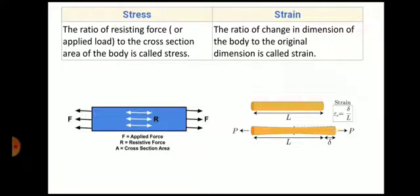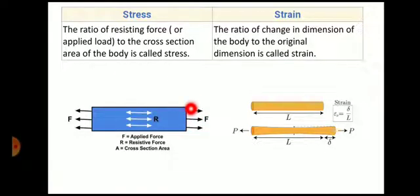The second difference: the ratio of resisting force or applied force to the cross-section area of the body is called stress. The applied force and resisting force are equal, and we are applying the force perpendicular to the cross-section. So the ratio of applied force or reaction force to the cross-section area is called stress.